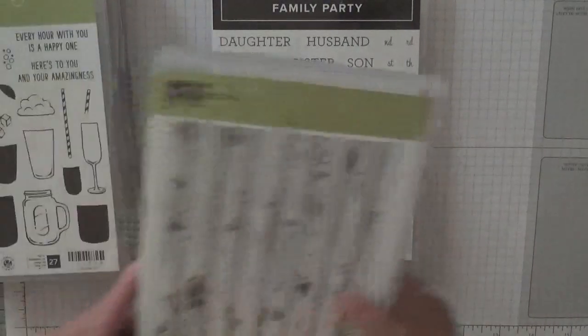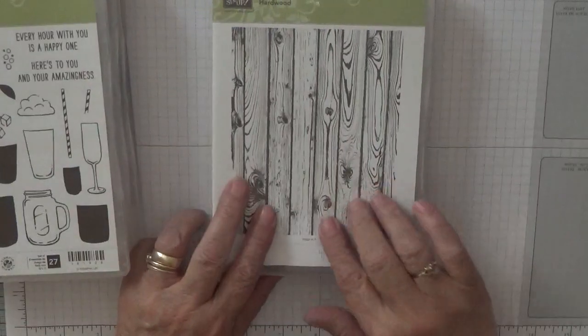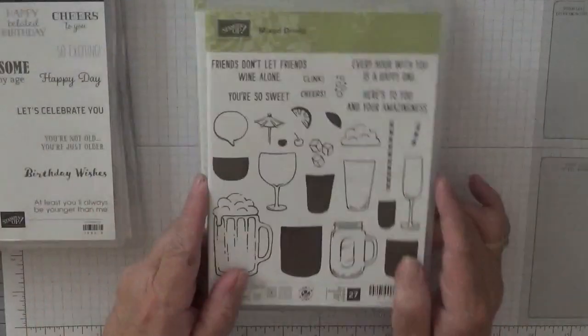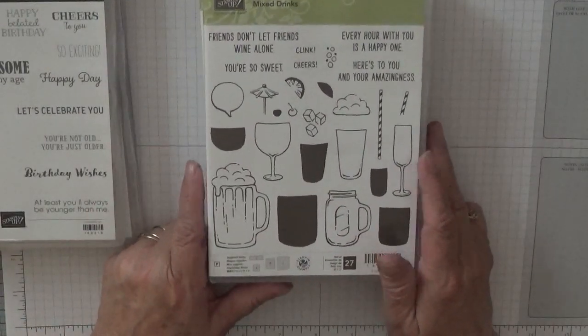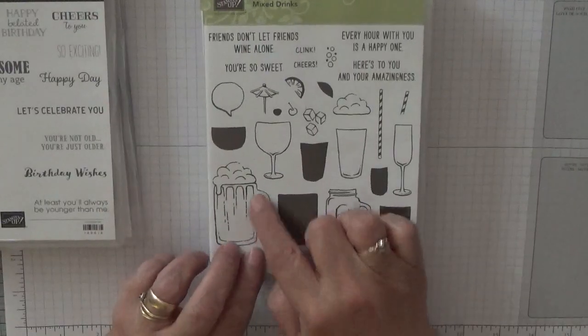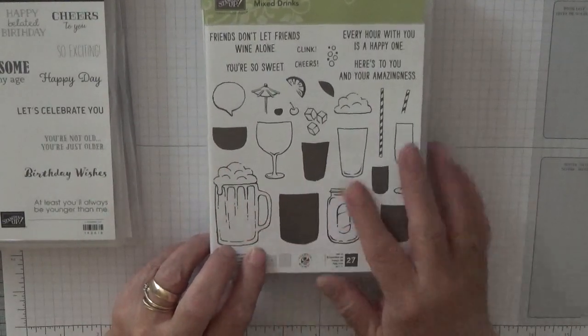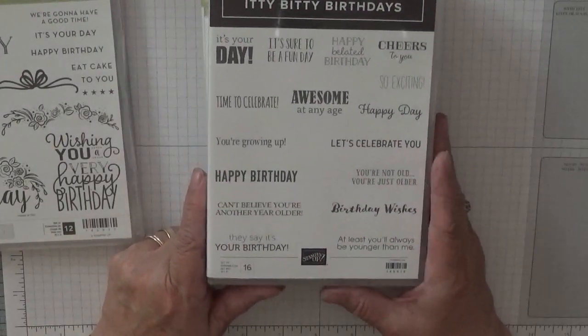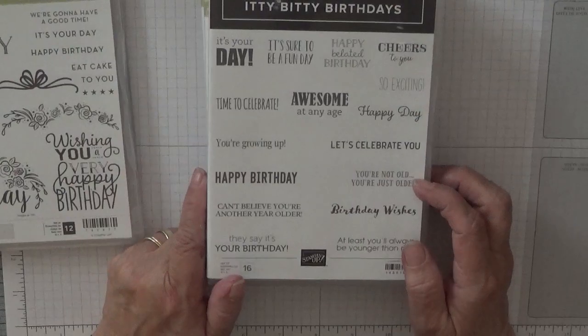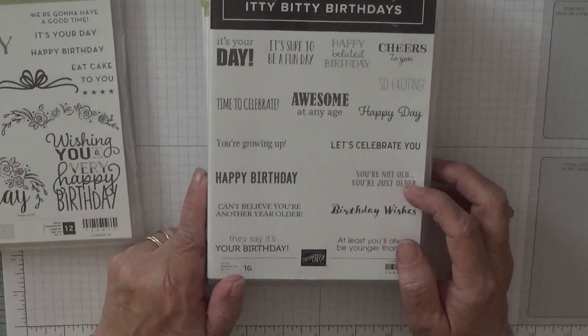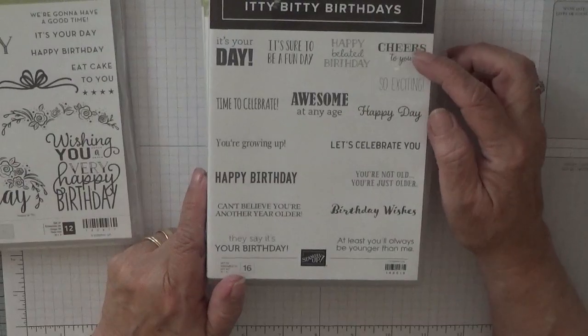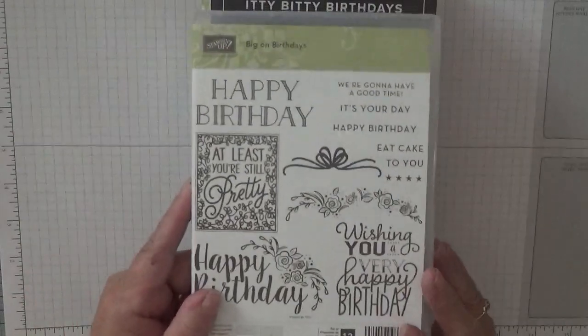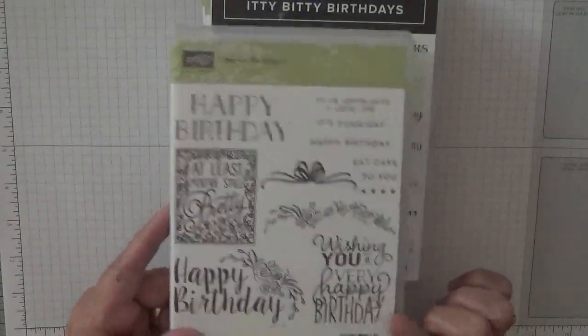The stamps we're using: the Hardwood stamp, now retired; Mixed Drinks, retired, for the pint of beer; Itty Bitty Birthdays for 'you're not old just older' and 'cheers to you'; and 'happy birthday' comes from Big on Birthdays, also retired.